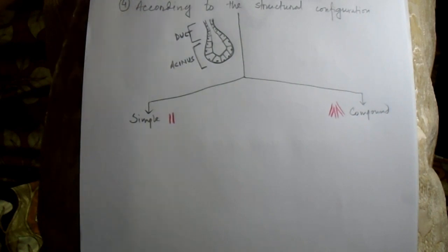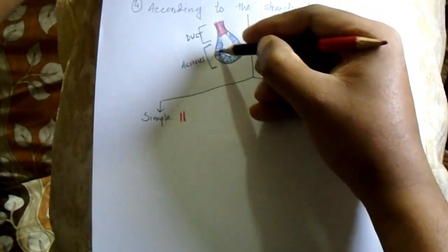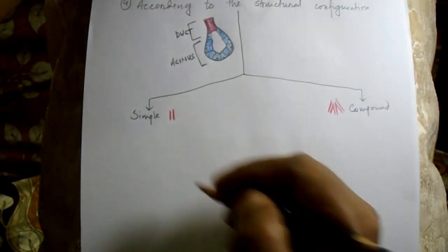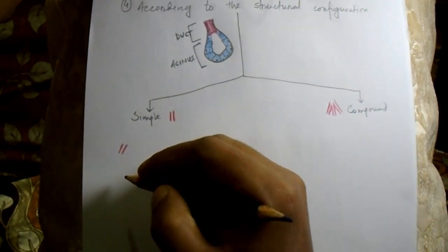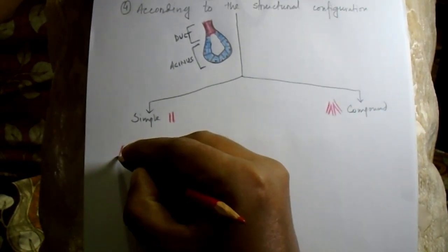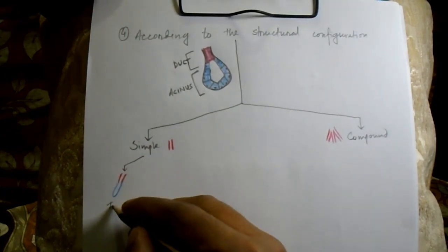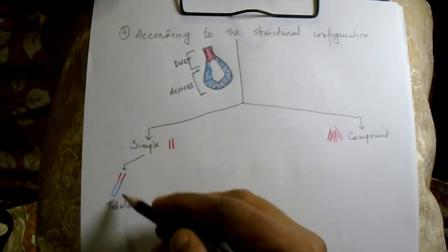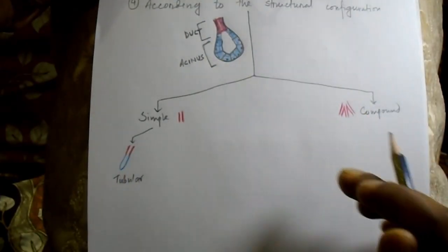Simple glands are further classified based on the shape of the secretory part. I will use red color for the duct and blue for the secretory part. The first subtype has a single unbranched duct and a tubular secretory part — this is called the simple tubular gland. I am drawing just the outline of the gland for better clarification.